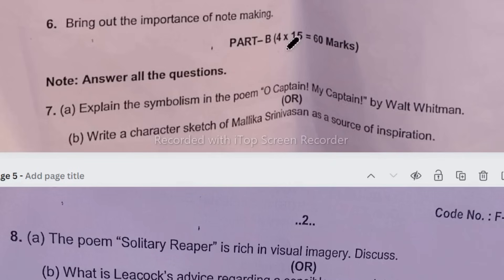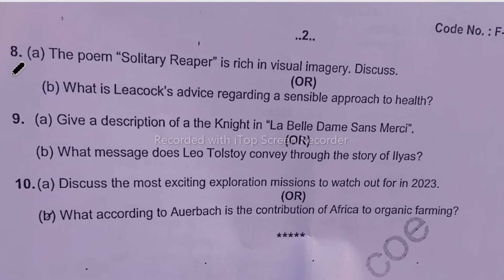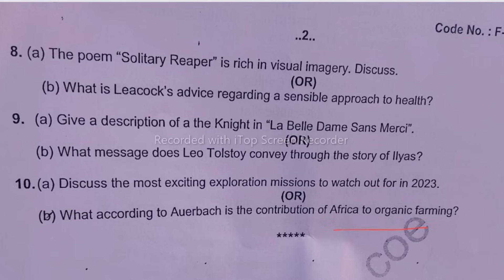Under Part B, you had to answer any four questions. Each question carries 15 marks, totalling 60 marks. The first question is: explain the symbolism in the poem 'Oh Captain, My Captain' by Walt Whitman, which is about Abraham Lincoln. In question 8, write a summary of either 'The Solitary Reaper' or 'How to Live to Be 200'. Next, give the description of 'La Belle Dame Sans Mercy' or Leo Tolstoy's 'Elias'. Additionally, discuss the most exciting exploration mission to watch out for in 2023, or write about organic farming.